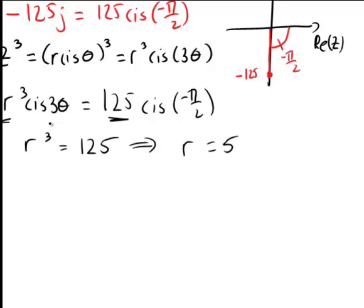Then 3θ must equal -π/2. But when we're looking at angles on the circle, if we add 2π onto this, we'll get an equivalent angle. So -π/2 + 2π will also give us 3θ.